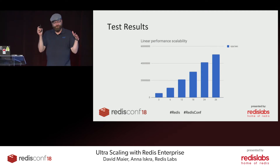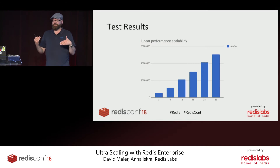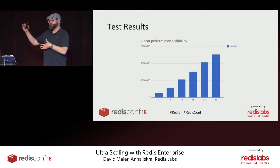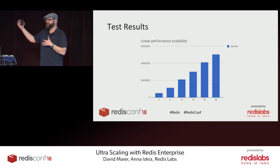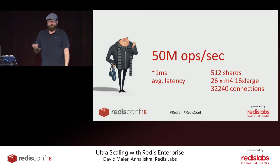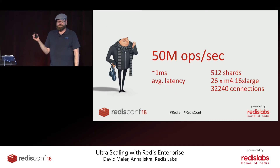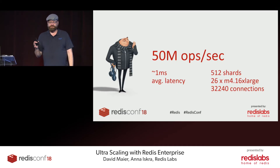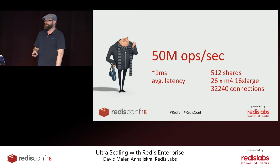Linear scalability with Redis using the open source cluster API is proven by this benchmark — from 3 nodes with about 5 million operations per second up to 26 nodes with 50 million operations per second. That's 512 shards, 26 machines, approximately 32,000 connections, at one millisecond latency.